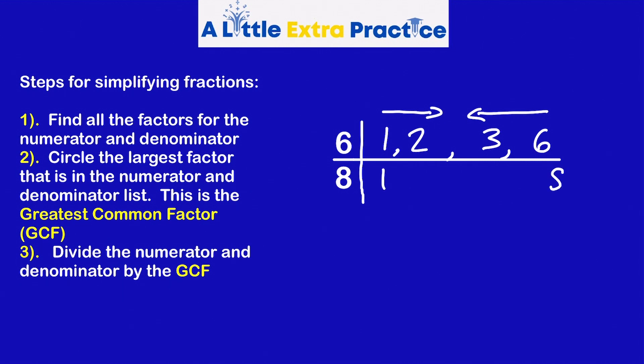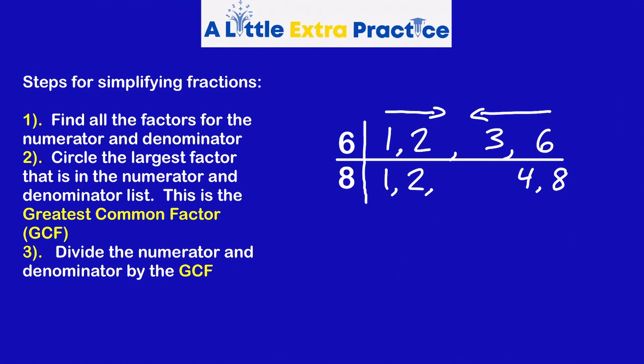Next one. One times eight, two times four. And there's one remaining number. Three. Three times, well, three is not a factor of eight. Nothing times three equals eight. Go ahead and delete that. Step number two: Circle the largest factor that is in the numerator and denominator list. This is called the greatest common factor. Well, they share a one, they share a two. Two is the largest number that is in both lists. That is called the greatest common factor.